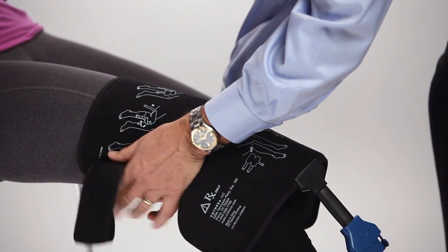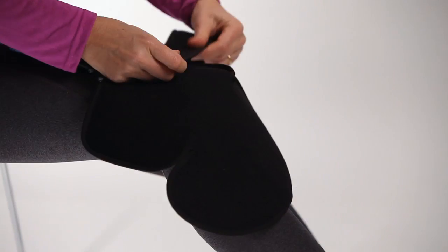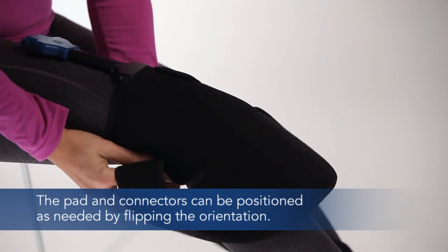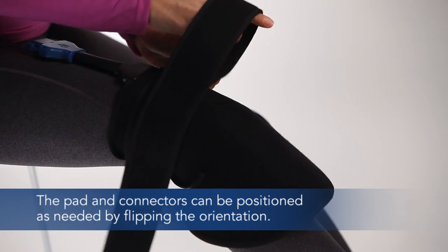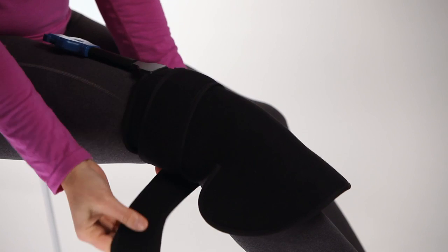Strap the knee pad so it is centered and fits snugly over the knee. The knee pad may be positioned differently if you want to route the tubing set another way. The pad should be secure but does not have to be overly tightened.